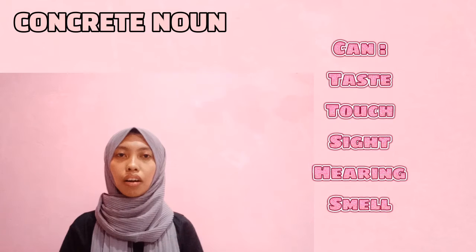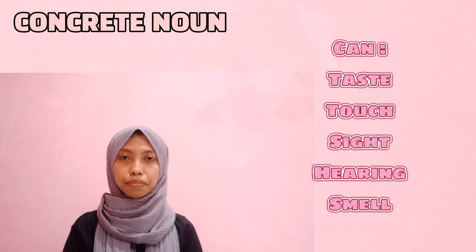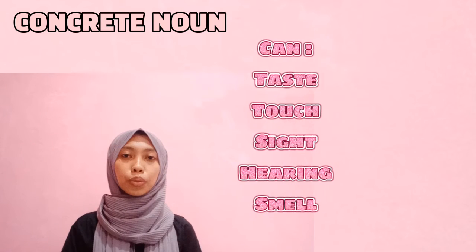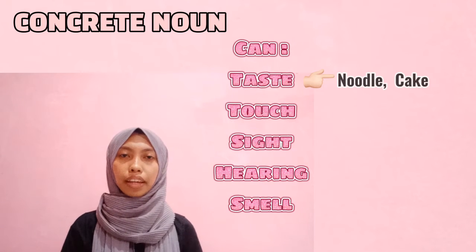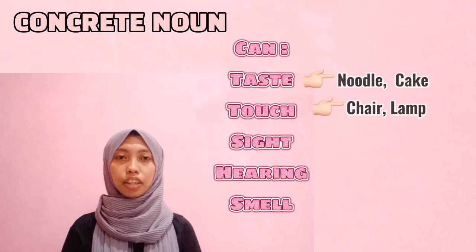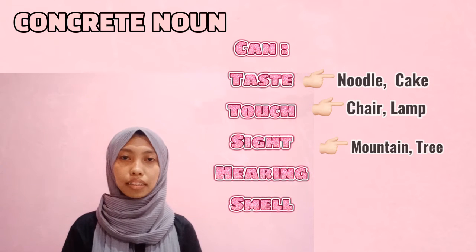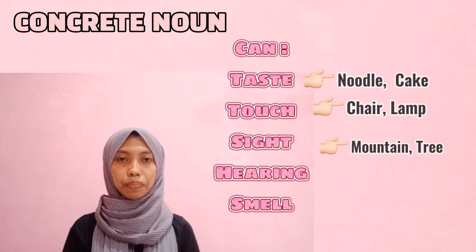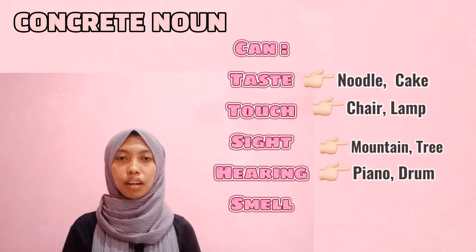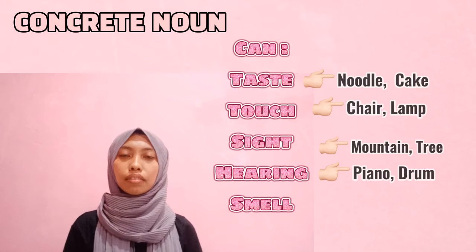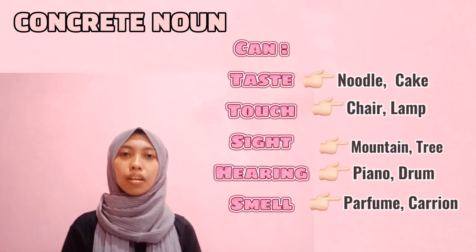Anything you can taste, touch, see, hear, or smell is a concrete noun. For example: noodle, juice, cake are nouns you can taste; chair, field, lamp are nouns you can touch; mountain, tree, cow, horse are nouns you can see; piano, guitar, drum are nouns you can hear; and perfume is a noun you can smell.